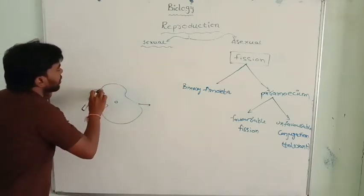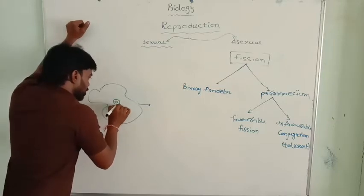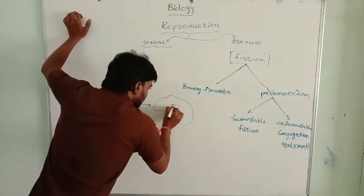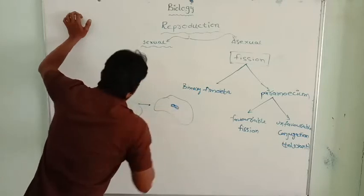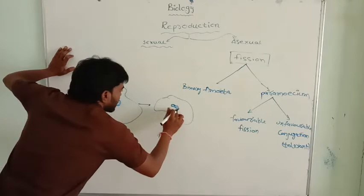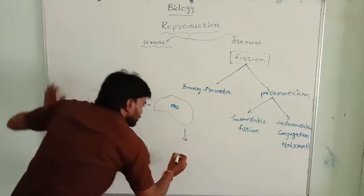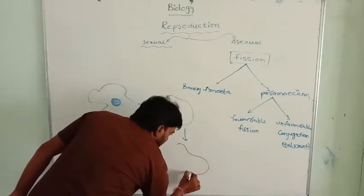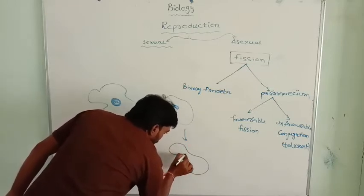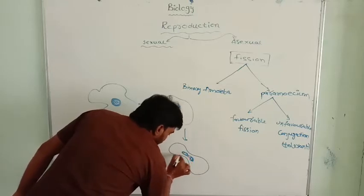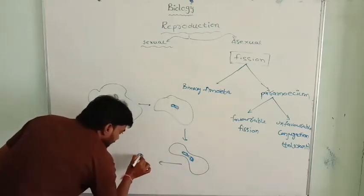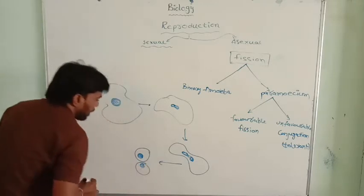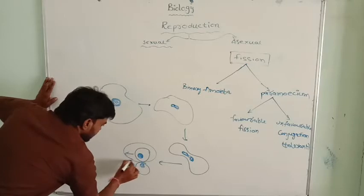How does the amoeba reproduce? Here, the adult amoeba first, the nucleus is going to split into two. Here the division is taking place in the nucleus. And later there is a division in the middle of the body. The permeable membrane is constricted in the middle of the body.